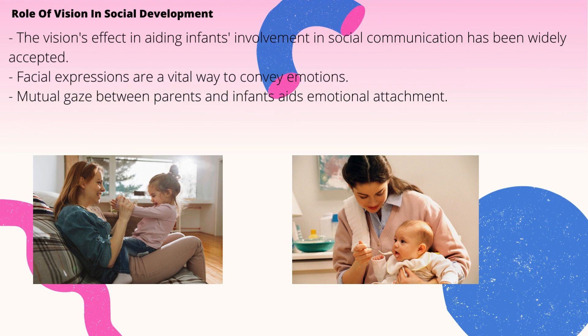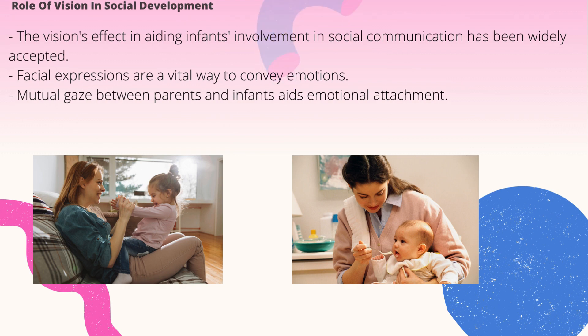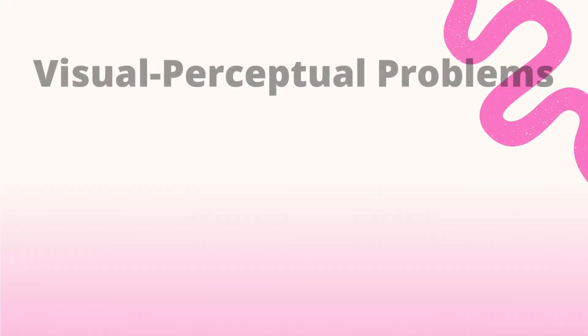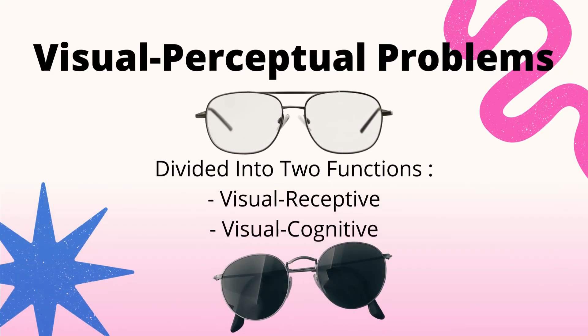Regarding the role of vision in social development, vision's effect in aiding infants' involvement in social interaction has been widely accepted. Facial expressions are a very important way to convey emotions. Mutual gaze between parents and infants assists emotional attachment, and an adult's facial expression tends to be an important driving force during social interactions with infants younger than nine months.